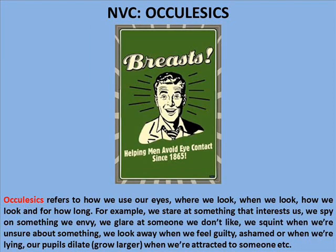NVC Oculesics. Oculesics refers to how we use our eyes — where we look, when we look, how we look and for how long. For example, we stare at something that interests us; we spy on something we envy; we glare at someone we don't like; we squint when we're unsure of something; we look away when we feel guilty, ashamed or when we're lying; and our pupils dilate — grow larger — when we're attracted to someone.